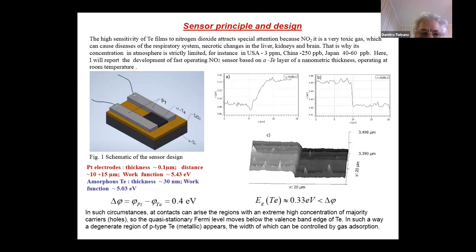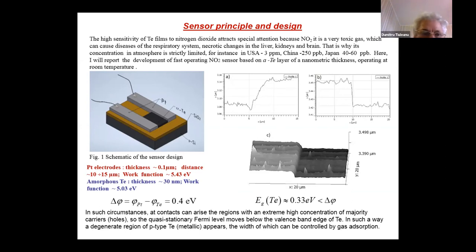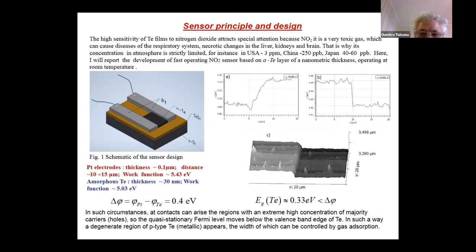The high sensitivity of tellurium films to nitrogen dioxide attracts special attention because it is a very toxic gas which can cause diseases of the respiratory system, necrotic changes in the liver, kidneys, and brain. That's why its concentration is limited in different countries: 3 ppm in the United States, 250 ppb in Europe, and only 40-60 ppb in Japan. We report the development of a fast-operating NO2 sensor based on an amorphous tellurium layer of nanometric thickness operating at room temperature.